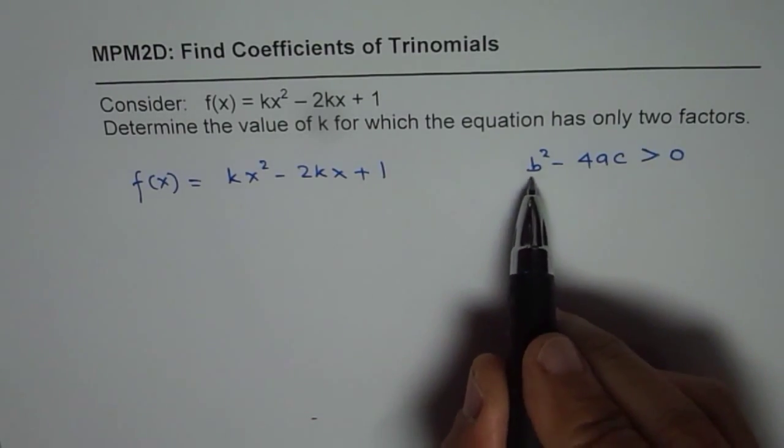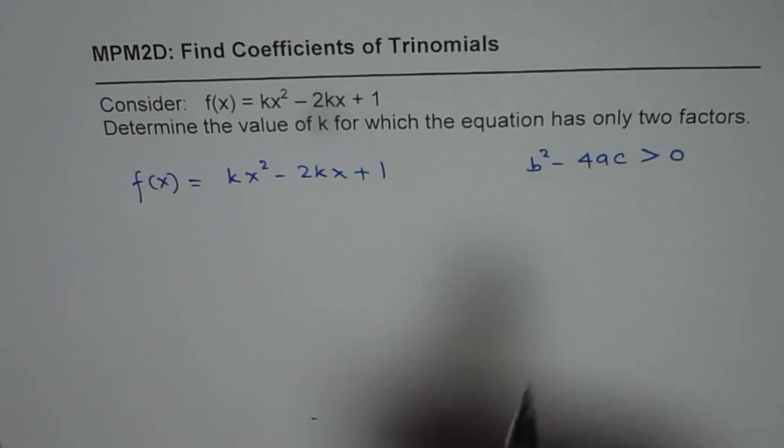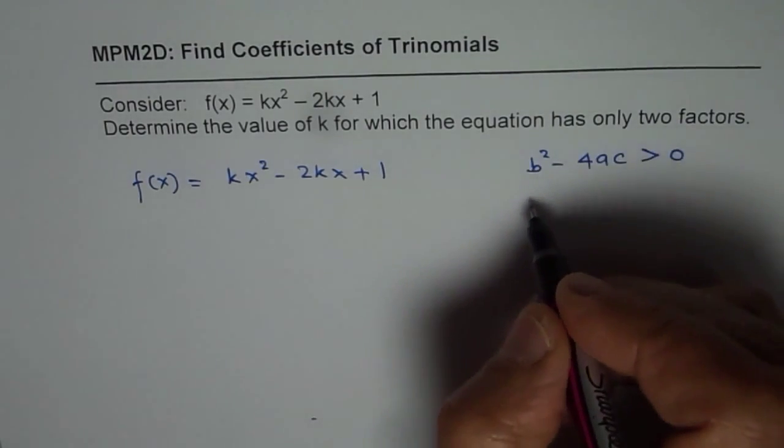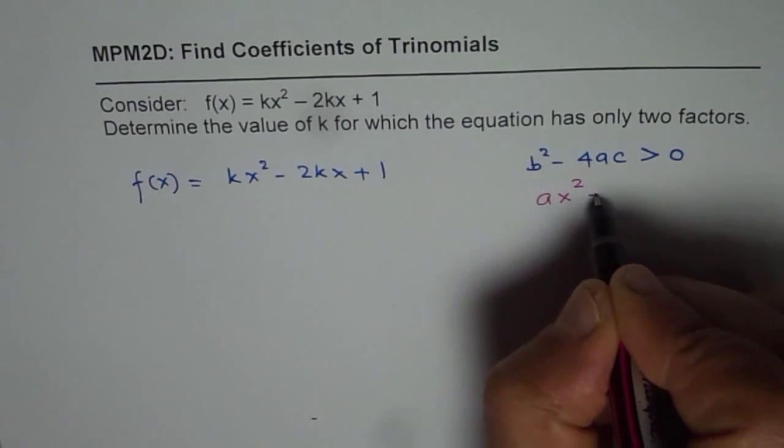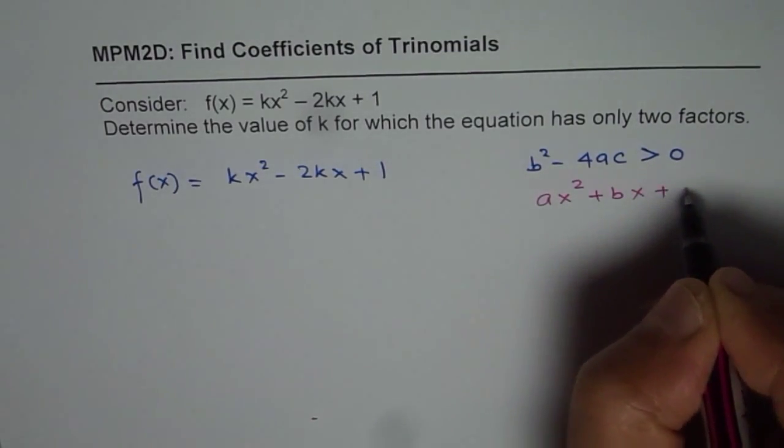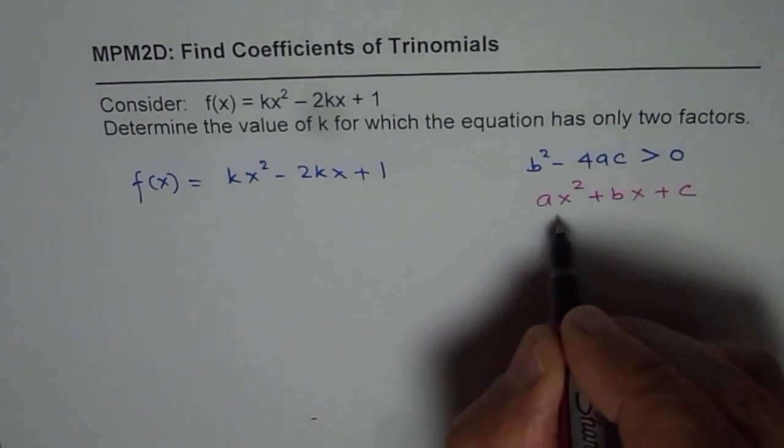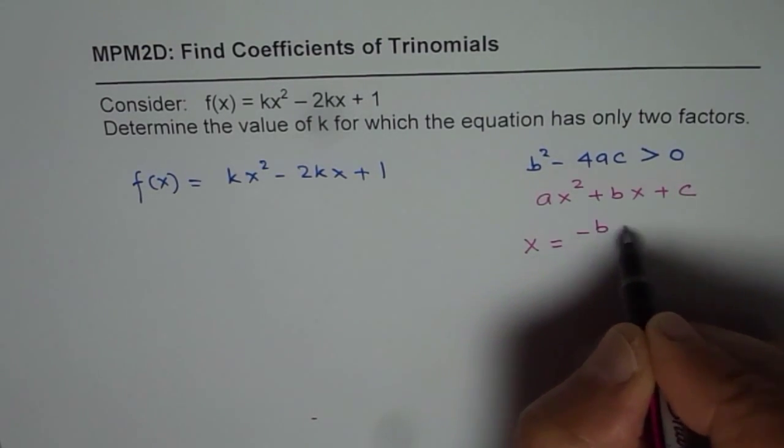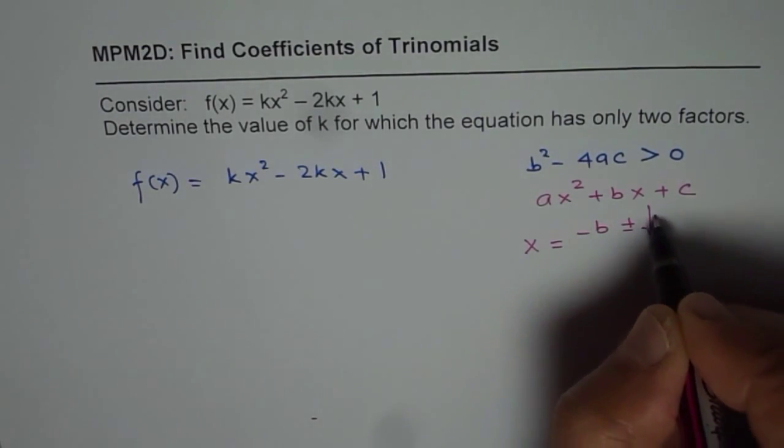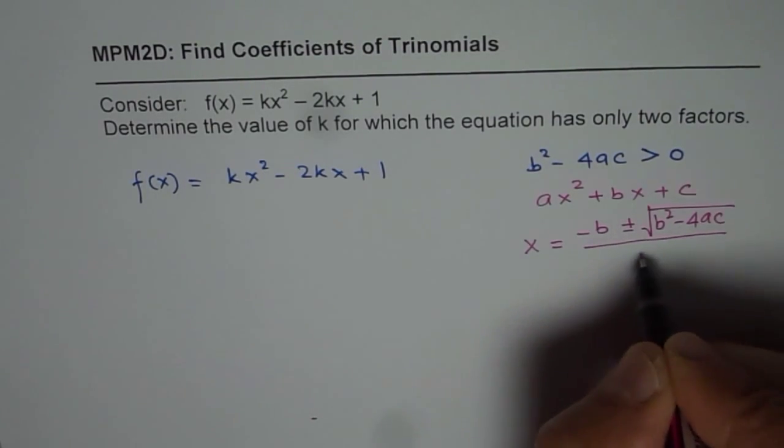I hope you remember B squared minus 4ac. We are talking about when a quadratic equation is given in standard form as Ax squared plus Bx plus C. The solution of this quadratic equation is x equals minus B plus minus square root of B squared minus 4ac over 2a.